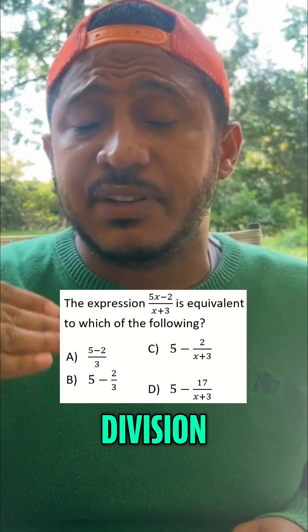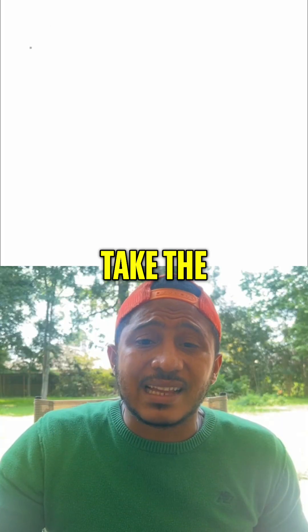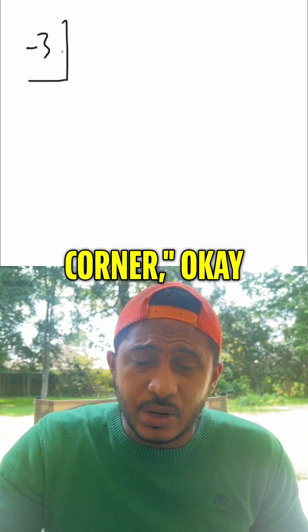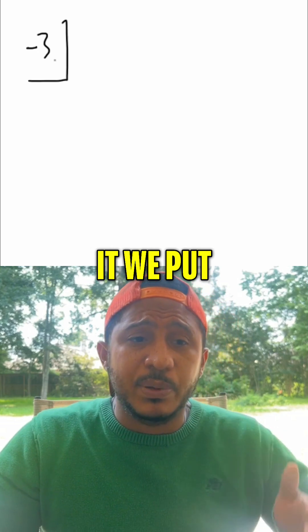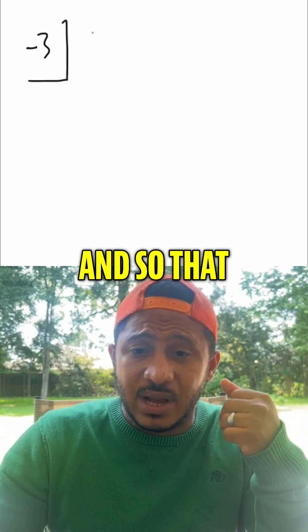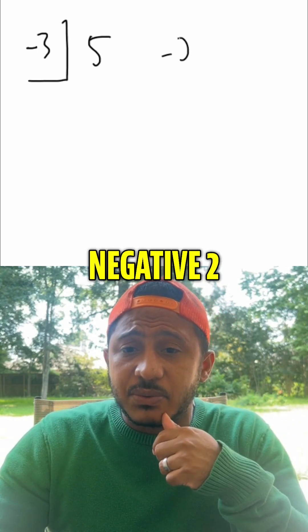So how we find that out is by using either synthetic division or long division. Take the negative 3, put that in the corner. And then outside of it, we put the other coefficients, the thing we're dividing by, and so that would be 5 and negative 2.